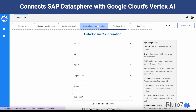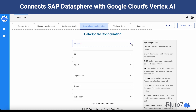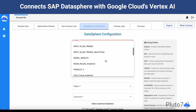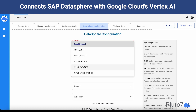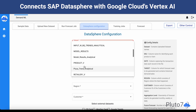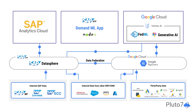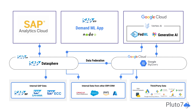DemandML leverages SAP BTP and Google Cloud components, and through SAP Datasphere, using federated learning, integrates with Google Cloud's Vertex AI to build precise forecasting models. The generated insights are stored in BigQuery, feeding back into Datasphere. You can easily access these insights through apps deployed on SAP BTP or SAP Analytics Cloud, all while maintaining your data's privacy and security using federated learning.